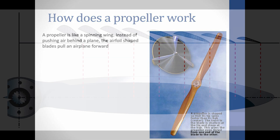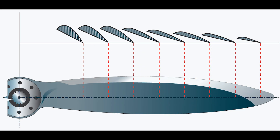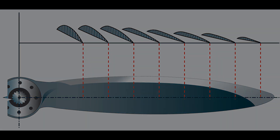In summary, airplane propellers work by converting engine power into thrust through the rotation of aerodynamic blades. By pushing air backward, propellers generate the forward motion necessary for flight. The efficiency and effectiveness of propellers depend on their design, blade angle, rotation speed, and other factors. Understanding these principles is essential for optimizing aircraft performance and achieving successful flight.